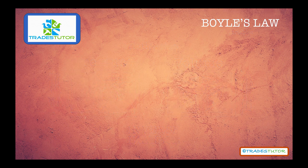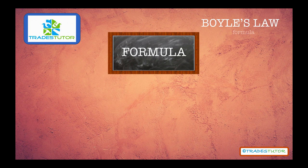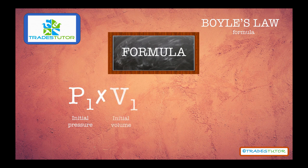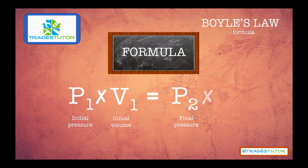The formula for Boyle's Law is this. We start with P1, or our initial pressure. We multiply that by V1, or our initial volume. And that's going to equal, on the other side, our P2, or final pressure, multiplied by V2, or final volume.